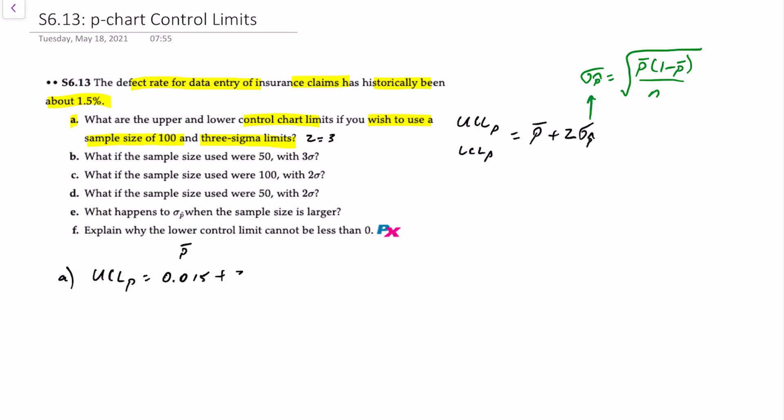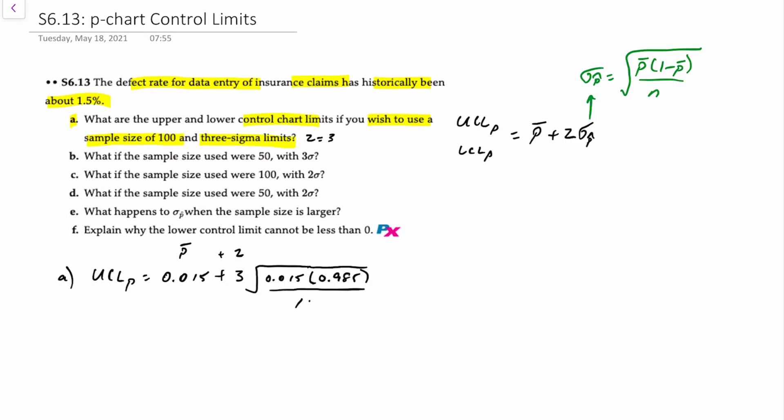Using our formula, the upper control limit is equal to 0.015, which is p-bar, plus three sigma times the square root of 0.015 times 0.985, since one minus 0.015 is 0.985, divided by 100. That's the part of the formula that's p-bar times one minus p-bar over n.